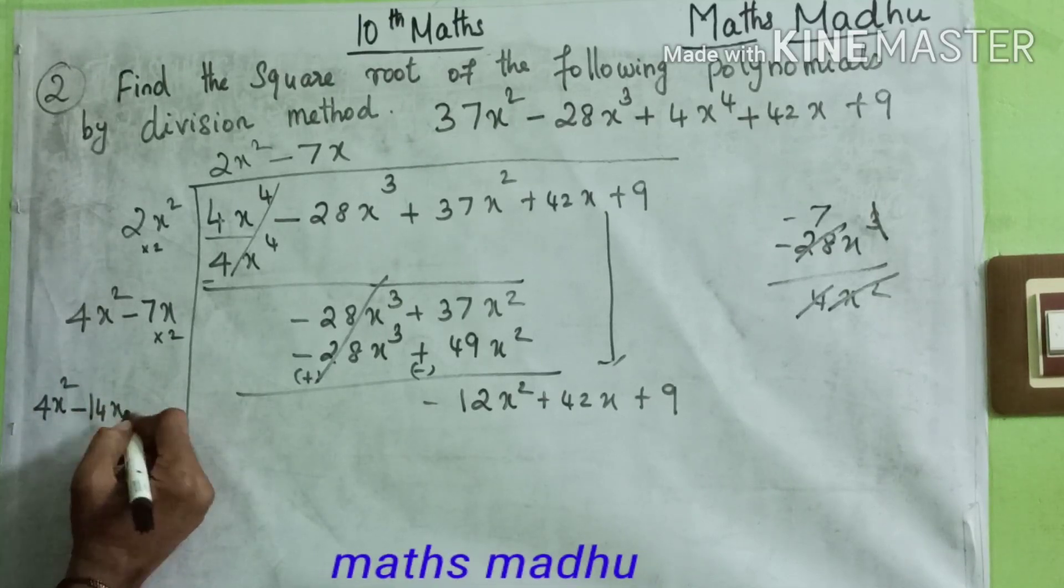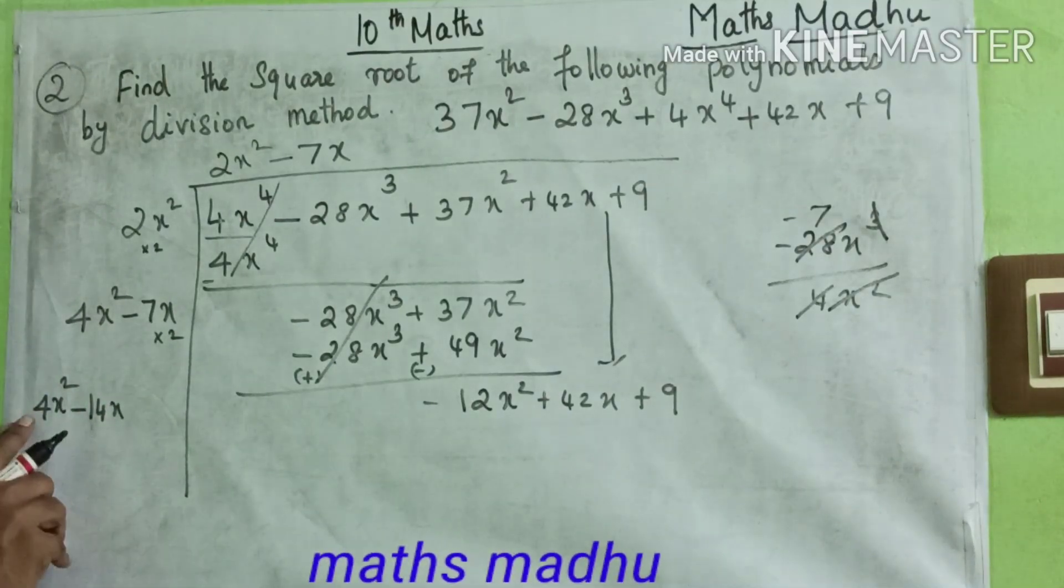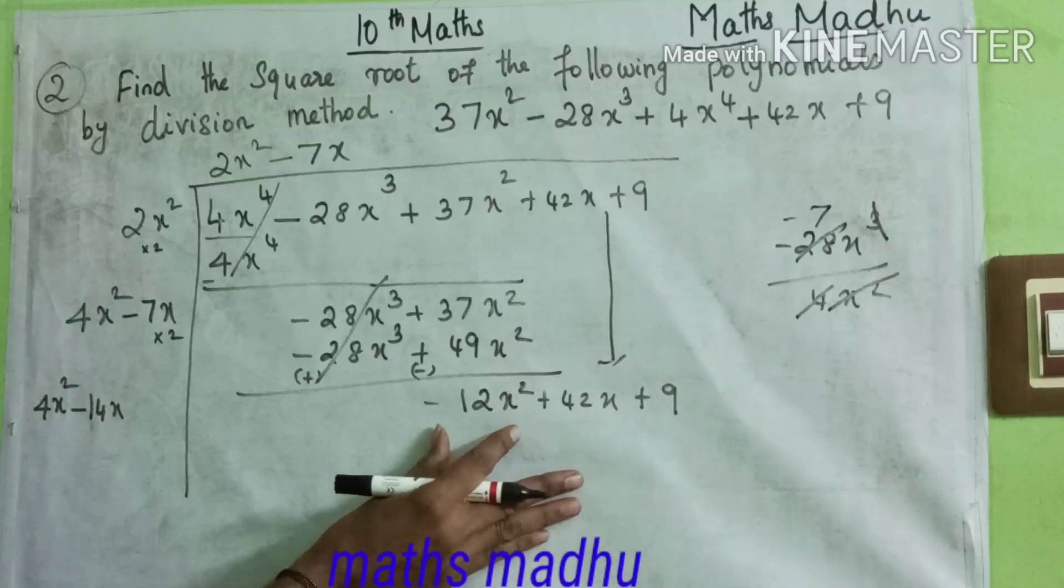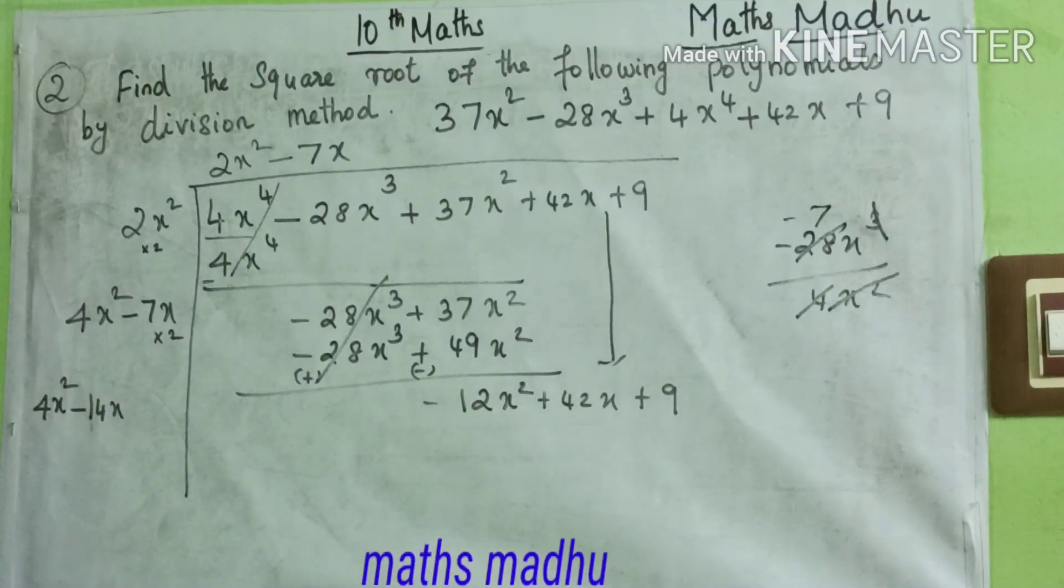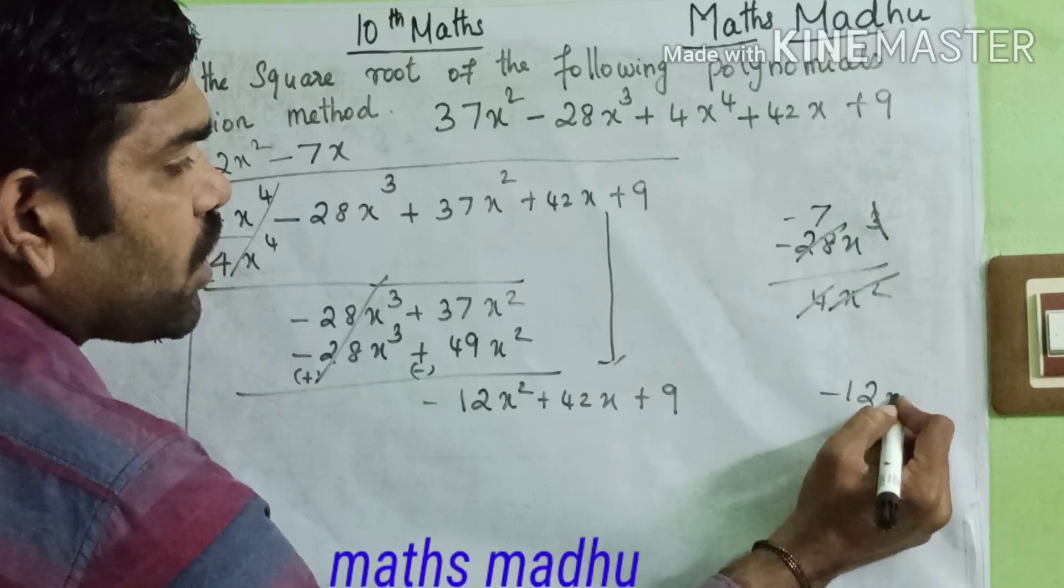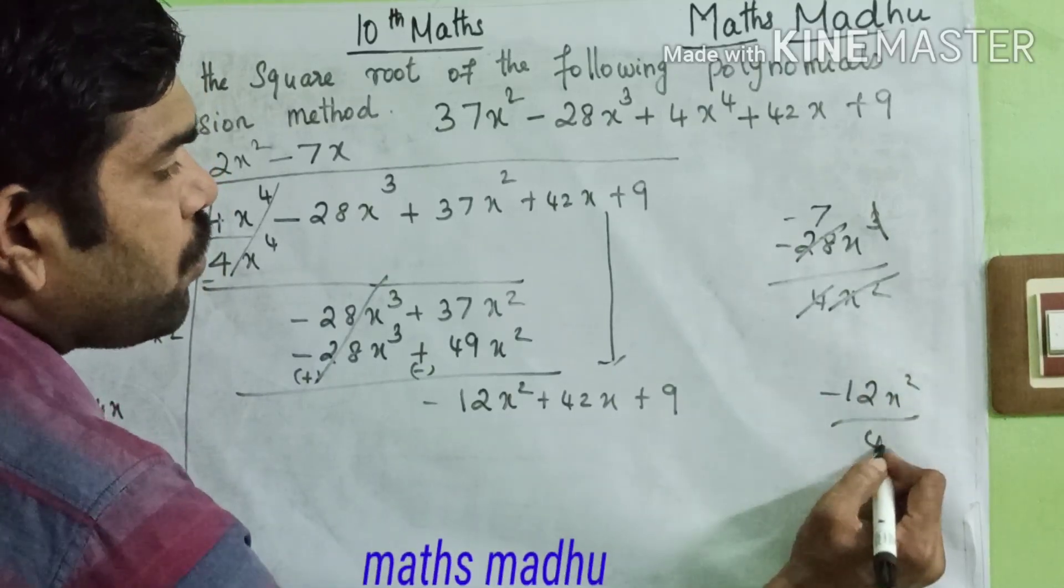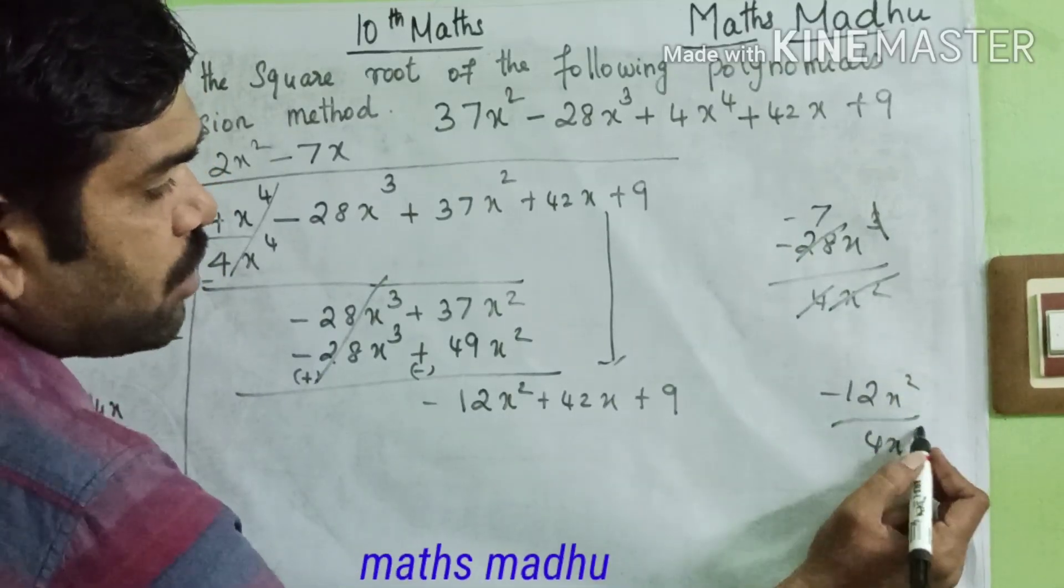Minus 14x. Sorry. So next is the 4x is final number on the 12x² number one divide. So minus 12x² divided by 4x².